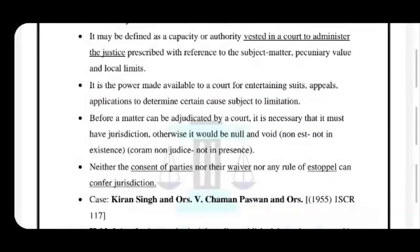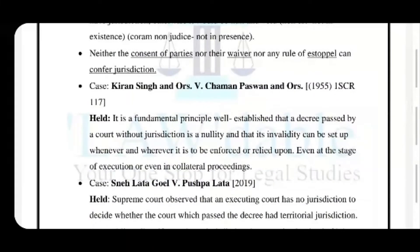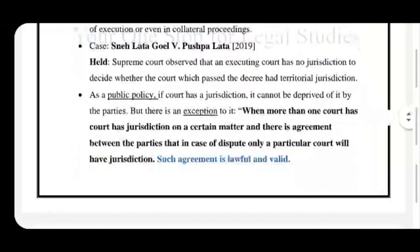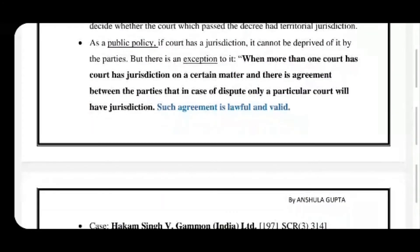Neither the consent of the parties, nor estoppel, nor waiver can confer jurisdiction. In the case of Kiran Singh versus Chaman Paswan, this is a very leading case, it was held that a decree passed by a court without jurisdiction is null and can be declared as null at any stage when it comes to notice that the court which passed the decree had no jurisdiction. As a matter of public policy, if a court has jurisdiction, it cannot be deprived of its jurisdiction by the parties. But if by agreement between the parties more than one court has jurisdiction over a matter, then they can decide by such agreement which court they would go to in case of dispute. Such an agreement limiting jurisdiction to a certain court is lawful and valid.